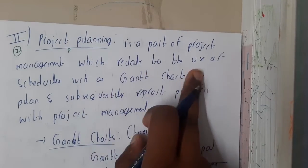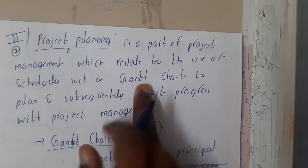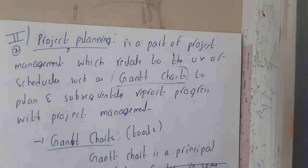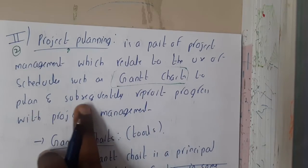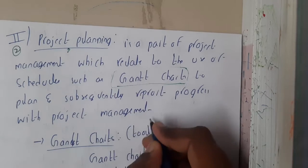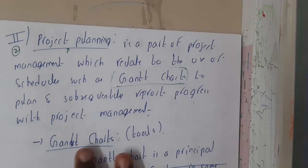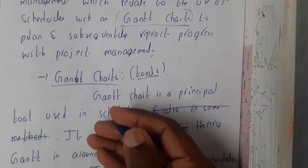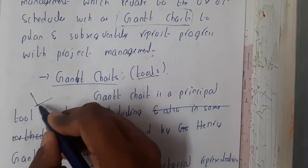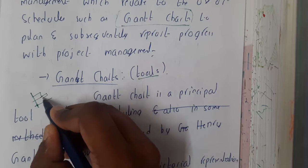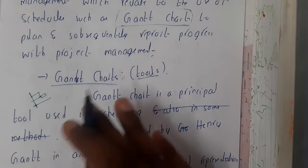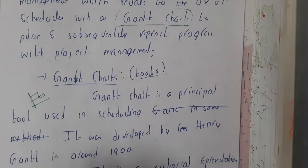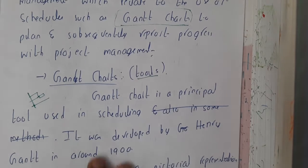Project planning is a part of project management which involves the use of a schedule such as a Gantt chart. We'll be discussing the Gantt chart in detail with an example. We'll be using such schedules to plan and subsequently report progress within project management. Basically, a Gantt chart is a tool through which you can clearly identify each task and how much time it will take. It's similar to how we use calendars or other scheduling applications in your workspace.